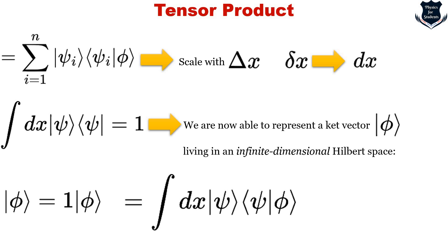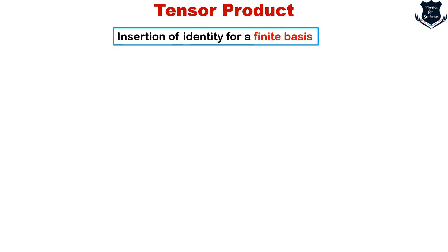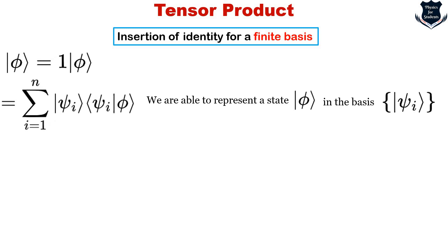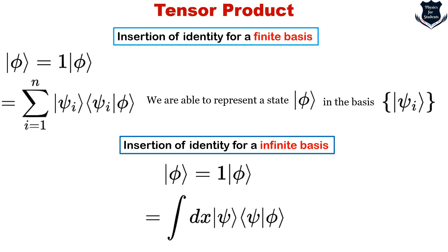To summarize: insertion of identity for a finite basis lets us represent a ket vector in the basis of psi. For an infinite-dimensional Hilbert space, we use the insertion of the identity with the integral form, where the sum becomes an integral. That concludes this short video, which elucidates many usages of tensor product and insertion of identity.